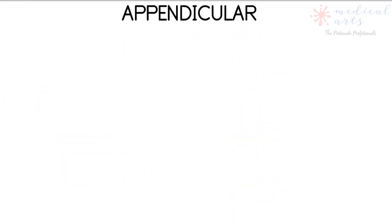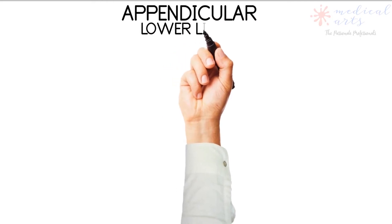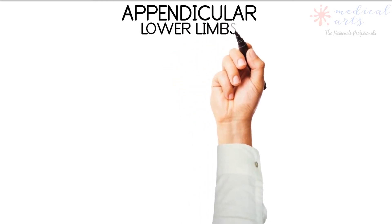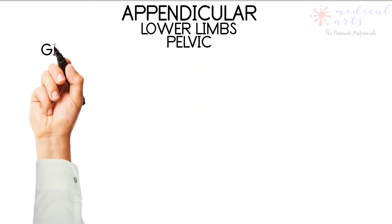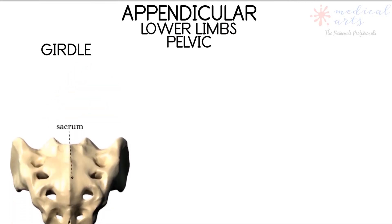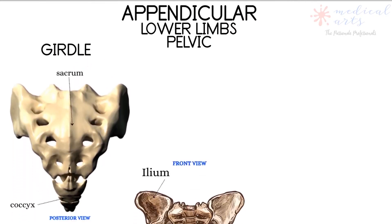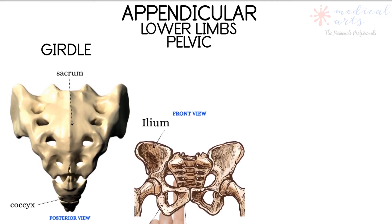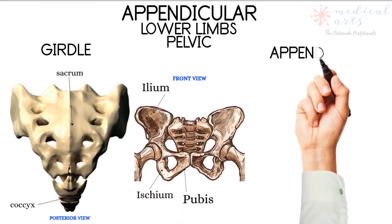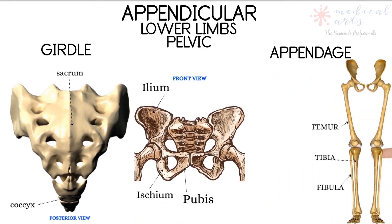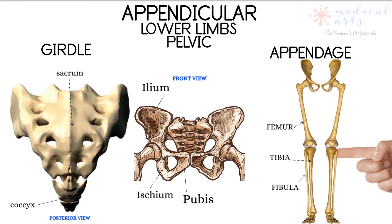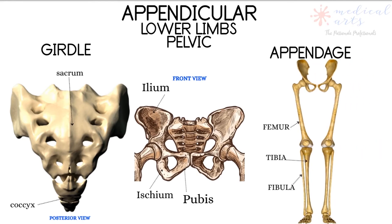The lower limbs part is called the pelvic. It is made of two prominent parts. First, the pelvic girdle connects the lower limbs to the axial skeleton and is made of the sacrum and coccyx, plus the other bones forming the pelvis. The second part is the appendage, which consists of the lower limb bones: femur, tibia, fibula, and the bones of the ankle and the foot.